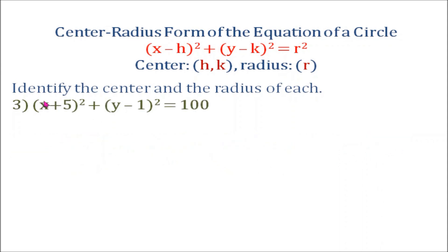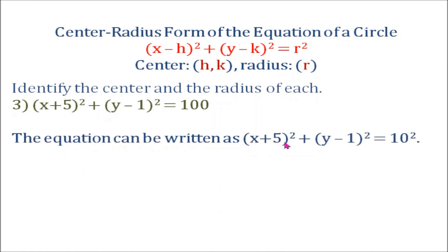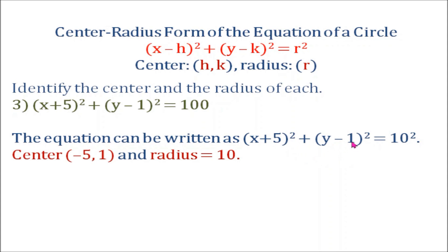Example number three: identify the center and the radius of the quantity x plus 5 squared plus the quantity y minus 1 squared equals 100. This equation can be written as the quantity x plus 5 squared plus the quantity y minus 1 squared equals 10 squared, since 100 can be written as 10 squared. The coordinates of our center are h and k: negative 5 and positive 1. Notice it is the quantity x plus 5 squared, so h is negative 5. We have the quantity y minus 1 squared, so k is 1, and the radius is 10.